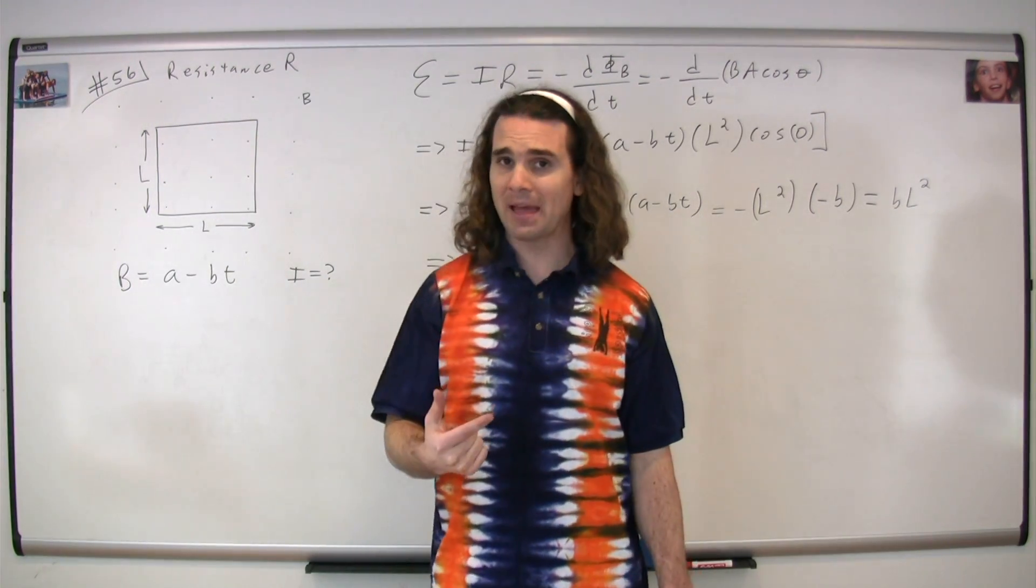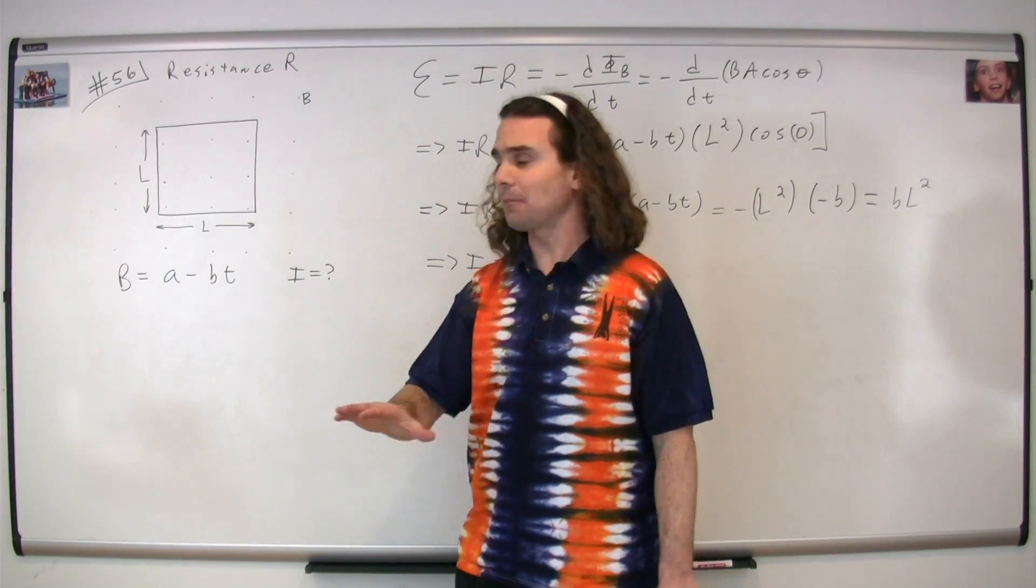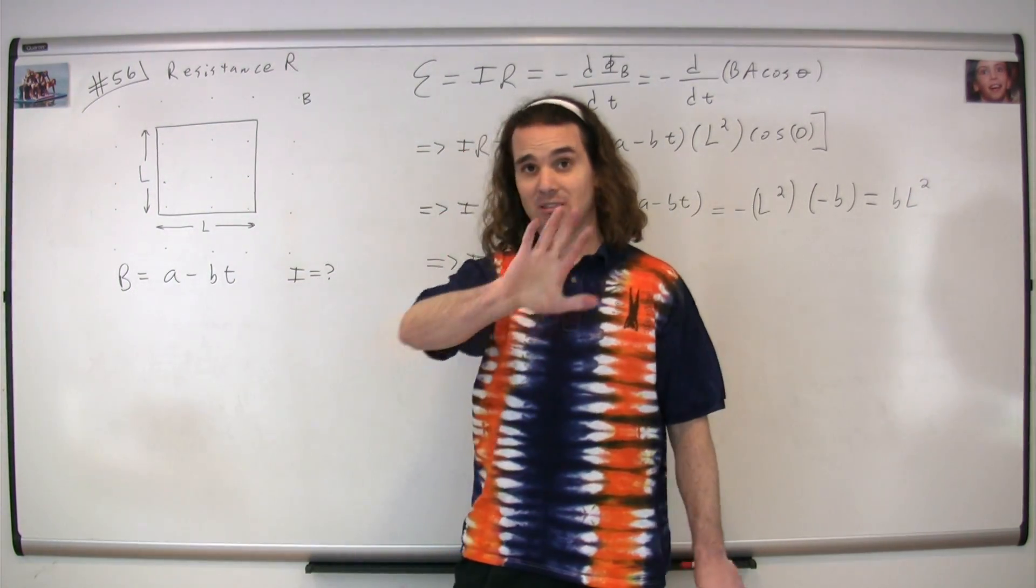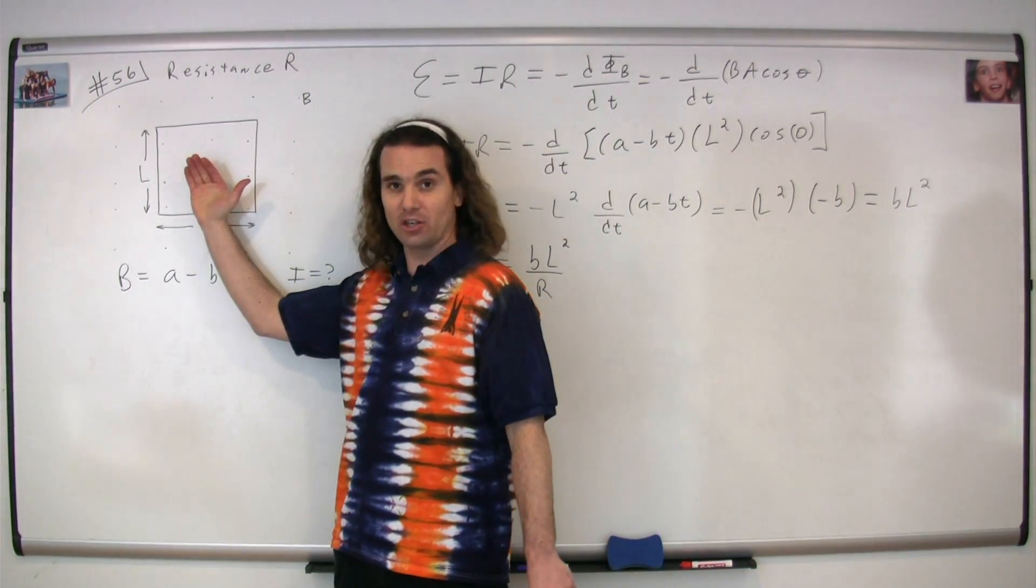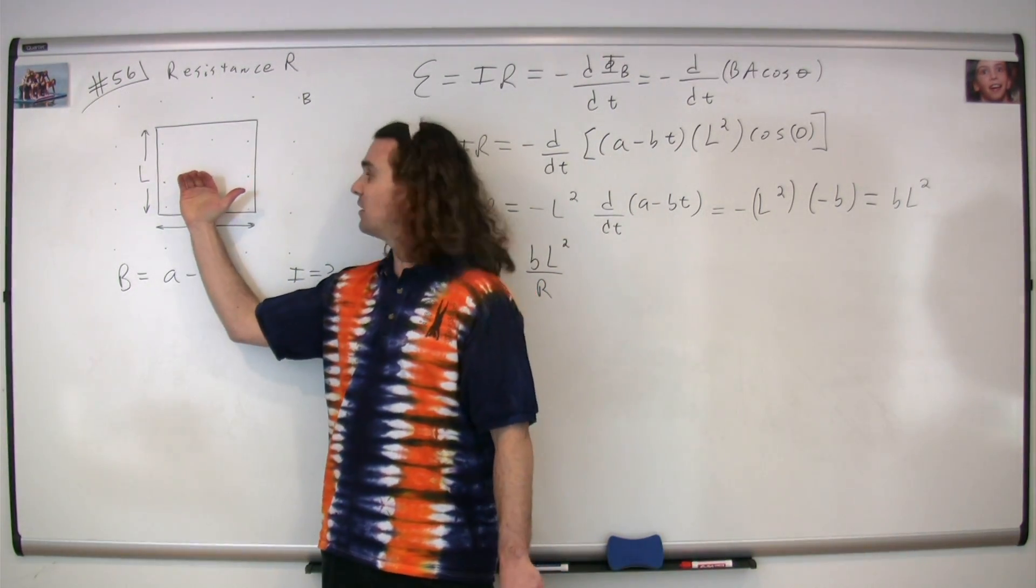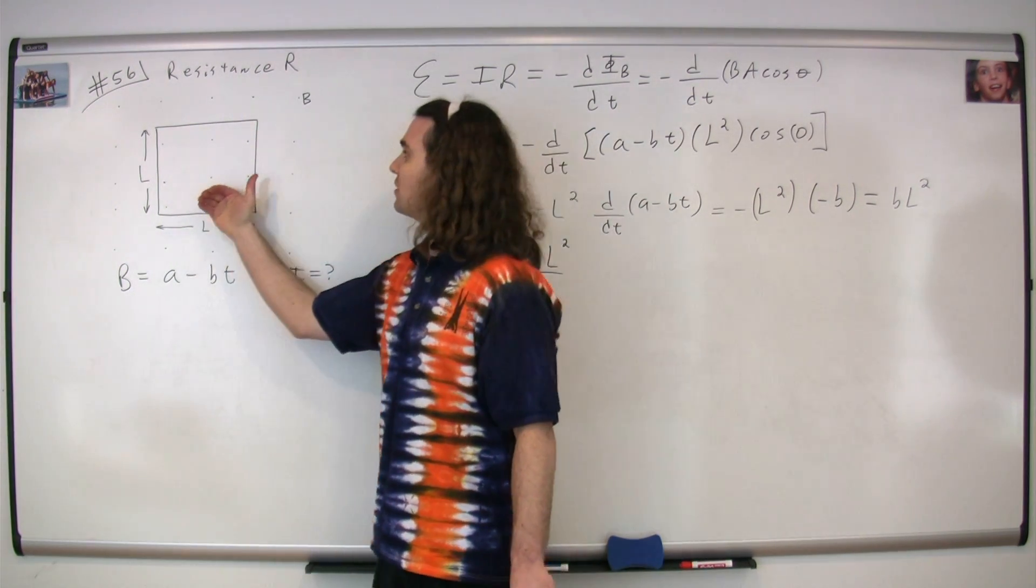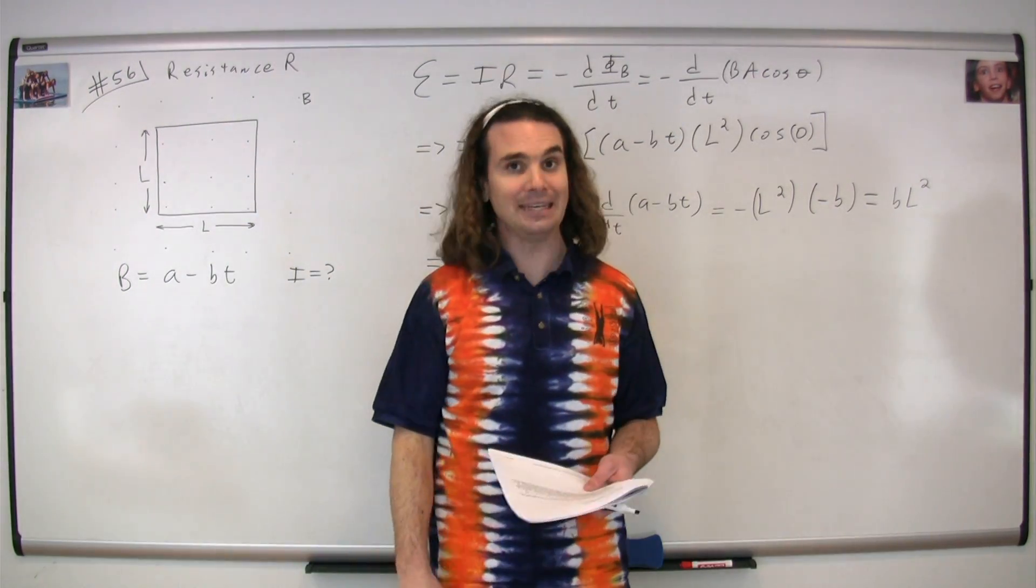Which means the induced magnetic field is going to be out of the board, which means you take your right hand, you curl your fingers in the direction of the induced magnetic field, and your thumb points in the direction of the induced current. So the induced current is going to be counterclockwise. The correct answer is E.